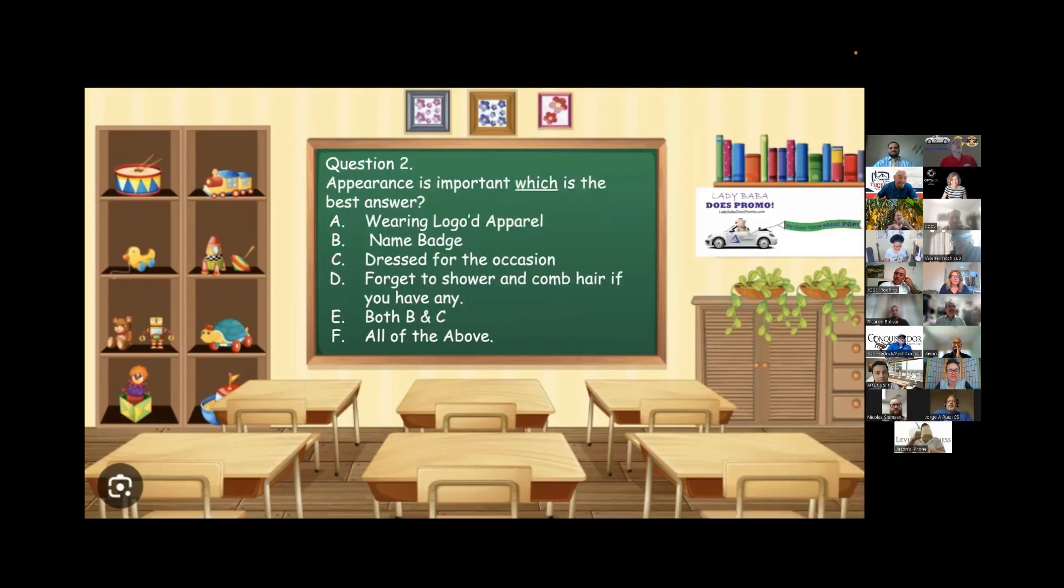Aaron, question two. Appearance is important. Which is the best answer? A. Wearing logo apparel. B. Name badge. C. Dressed for the occasion. D. Forget to shower and comb hair if you have any. E. Both B and C. Or F. All of the above. I'm going to say A because, yeah, B should be included. C, definitely. I think it would be A. A, B and C. Technically, this was a trick question. It's both B and C. So, I kind of tricked you with that. But yes, correct. You definitely want to wear logo apparel. You want to have a name badge. And you want to dress for the occasion. And if you have hair, it'd be a good idea to comb it.